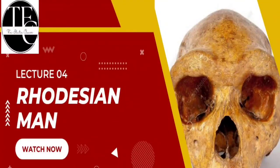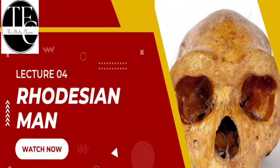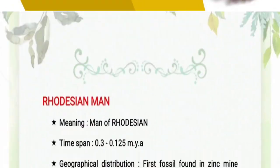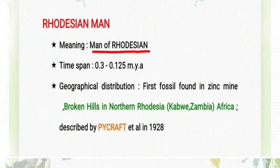Hello friends, welcome to the Elite Class. I hope you all are doing good. Let's get started with our today's topic, that is Rhodesian Man. Starting with the introduction, the meaning of Rhodesian Man comes from the Man of Rhodesia. It is called Man of Rhodesia because its first fossil was found in the zinc mine of Broken Hills.